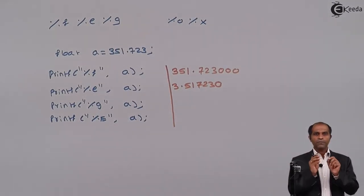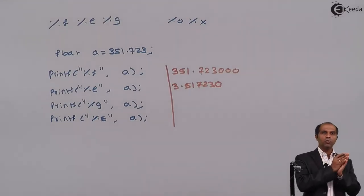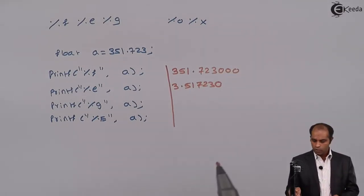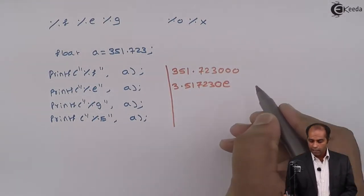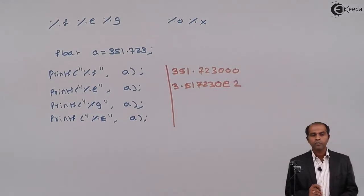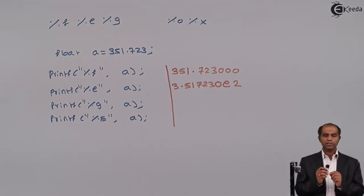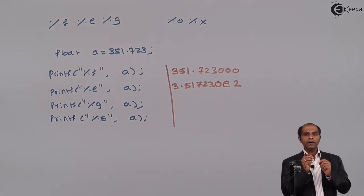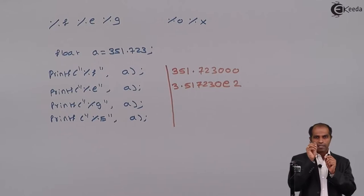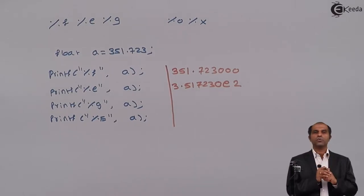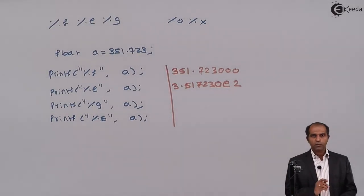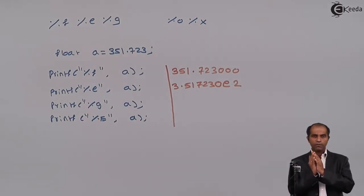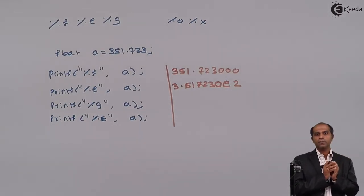I shifted the decimal point by two positions, so the output shows e2 — and with some compilers you may see e+2. The plus sign indicates the decimal was shifted towards the left-hand side. If it had been shifted to the right, it would be e-2.